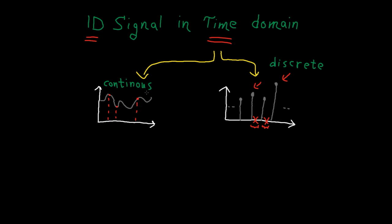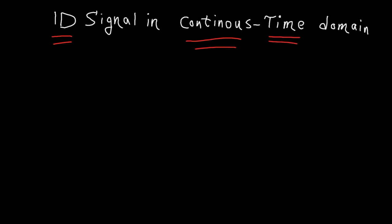In this course, we just work with continuous signals. Let me write it down again because that's the kind of signal we work with for the rest of this course. One-dimensional signal in continuous time domain. This signal is usually represented by xt value versus time.